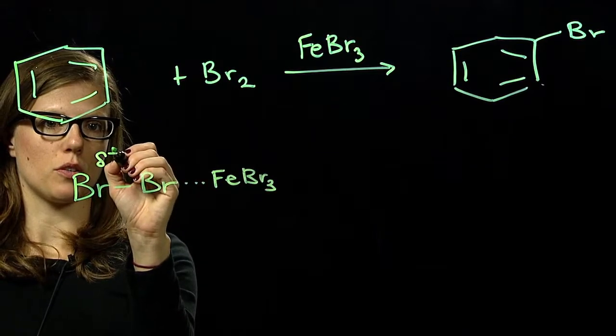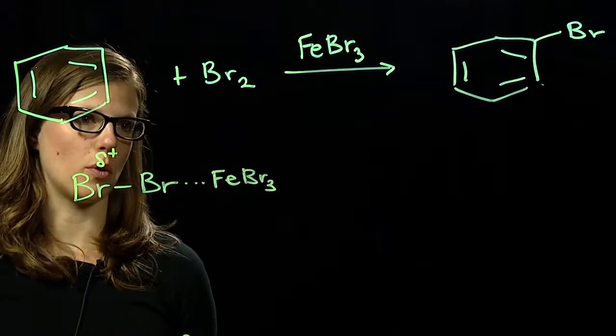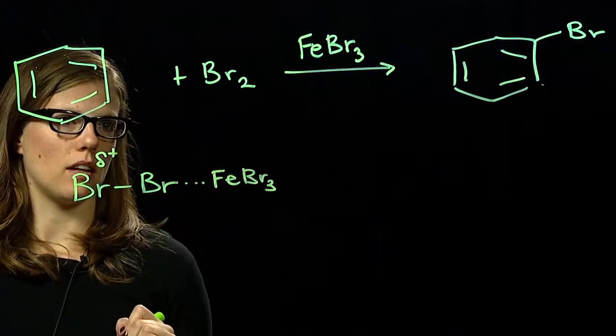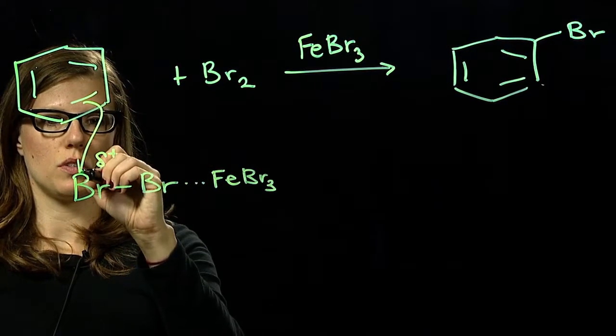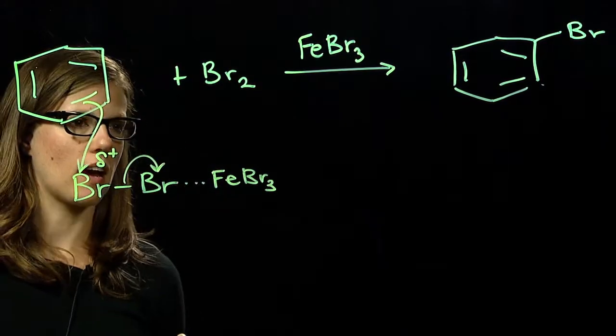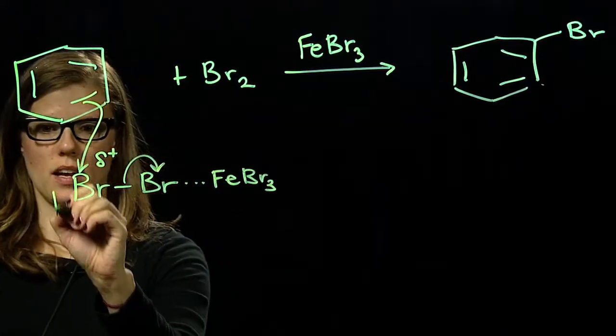This now gives us a partial positive charge on the terminal bromine that allows the electrons in the aromatic ring, the benzene ring, to attack this bromine and kick out our Br- attached to the iron.